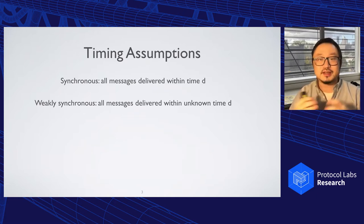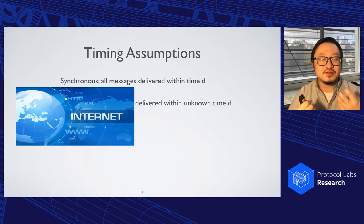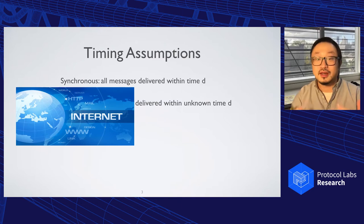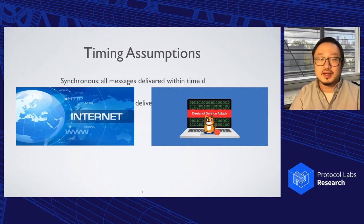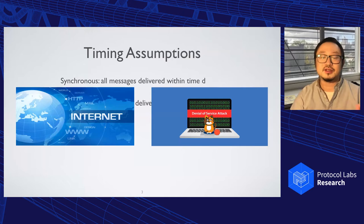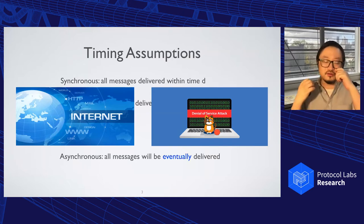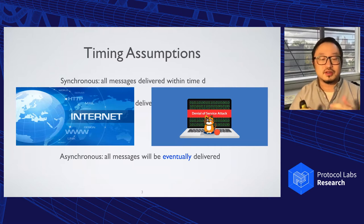Synchronous protocols might be okay in the conventional data center setting, but now we are talking about deploying consensus on the open internet. The internet might span across the globe, and in general it might be too optimistic to assume the open internet to be synchronous. What's worse is that, as shown in the literature, if we do a denial-of-service attack on a small number of nodes, many synchronous protocols will simply get stuck — essentially losing the critical liveness property. This calls for a more robust asynchronous protocol that does not rely on any timing assumption.